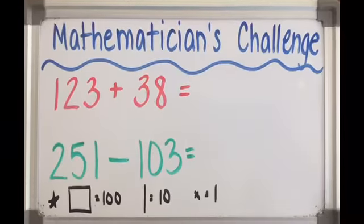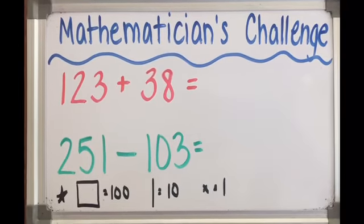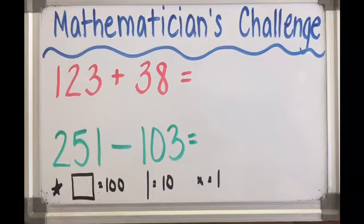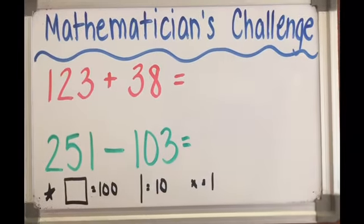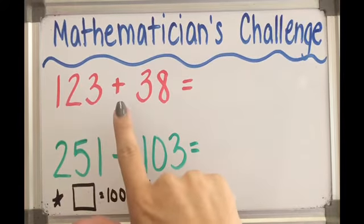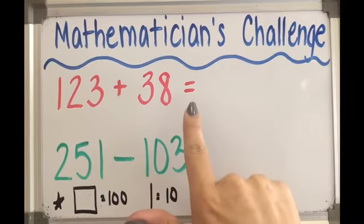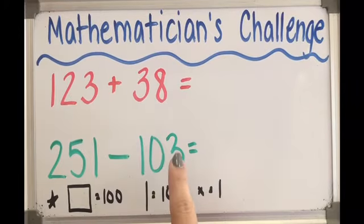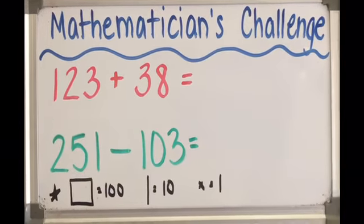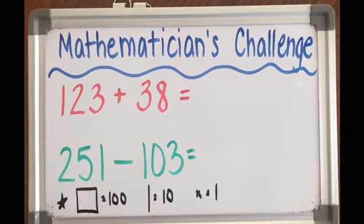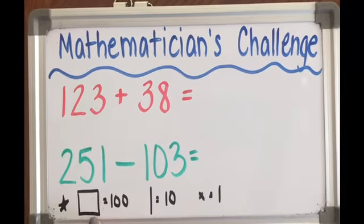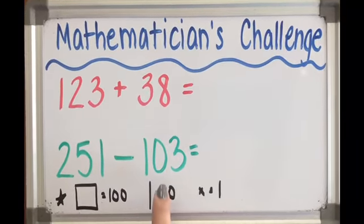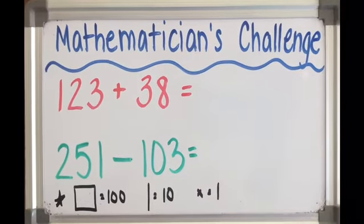Okay, I've been going easy on you and now I've decided you're ready. Our mathematician's challenge: 123 plus 38 using base 10 blocks, 251 minus 103 using base 10 blocks, and in case you forgot, I reminded you that a flat equals 100, a rod equals 10, and a cube equals 1.